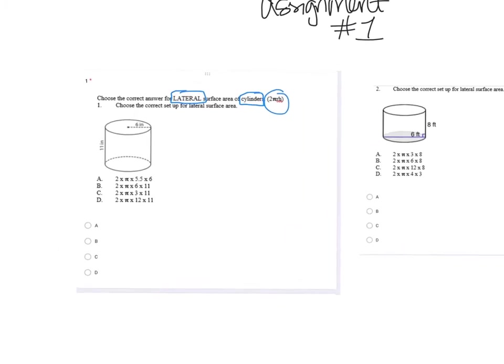The formula you need to use every single time is 2πrh — and you're not even solving these this week. You're just plugging in the radius and the height for cylinders. It's super easy. That's all you need: the radius and the height of the whole cylinder or the whole can.